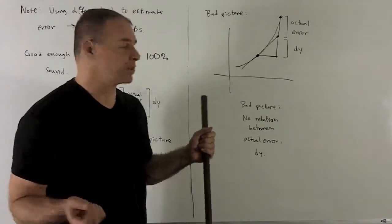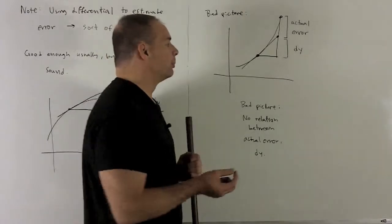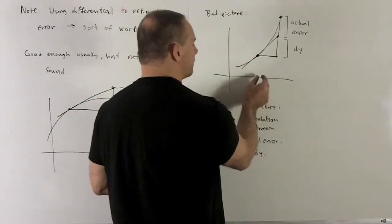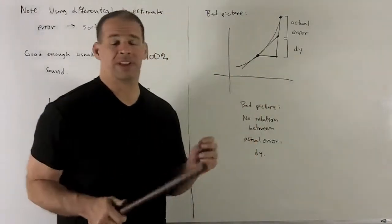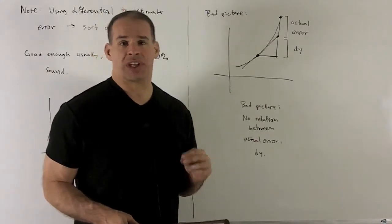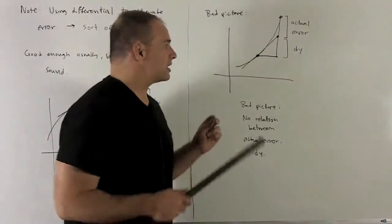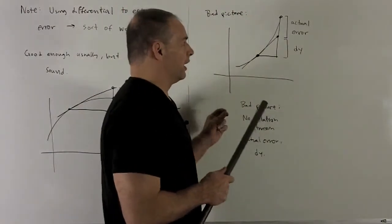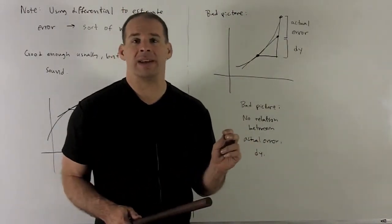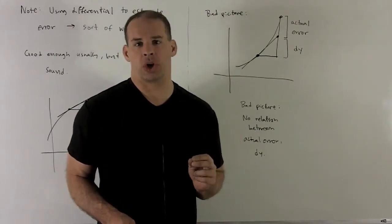So what's happening here is if your function's nice and your dx is very small, the hope is that the differential is just going to catch the actual error anyway. So in this case, there's a little bit of wishful thinking going on. Not entirely justified, but it's usually going to do the trick.